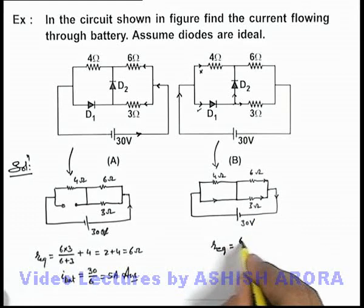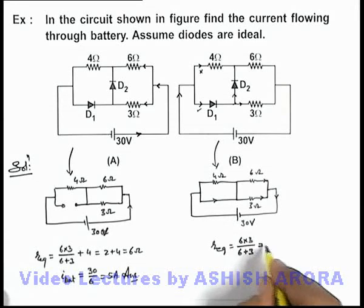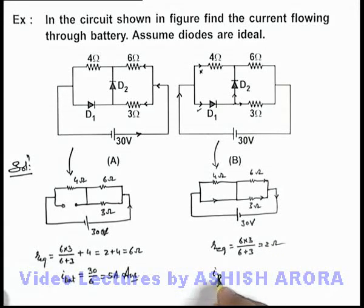So here equivalent resistance will be 6 into 3 by 6 plus 3, that'll be 2 ohms only. And the current through battery now can be given as 30 by 2, this will be 15 ampere, that'll be the answer to the part B of this problem.